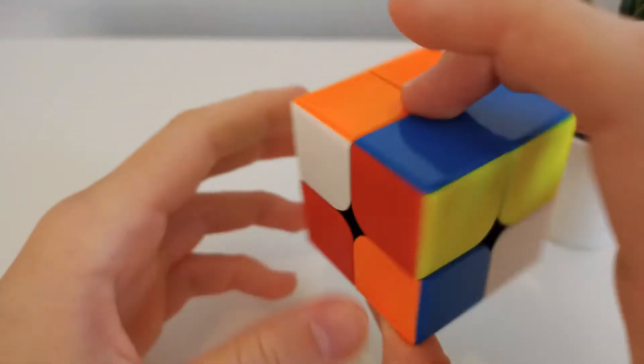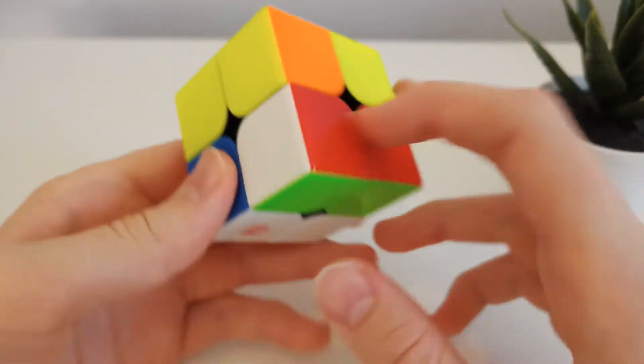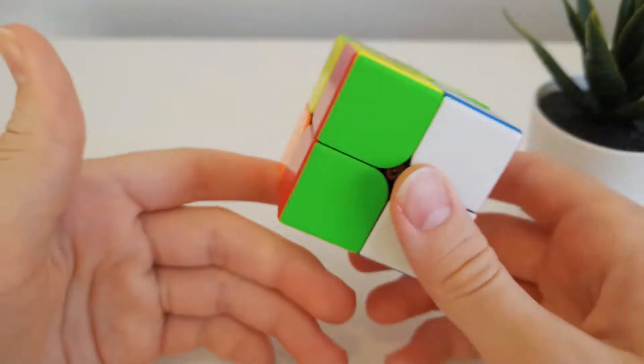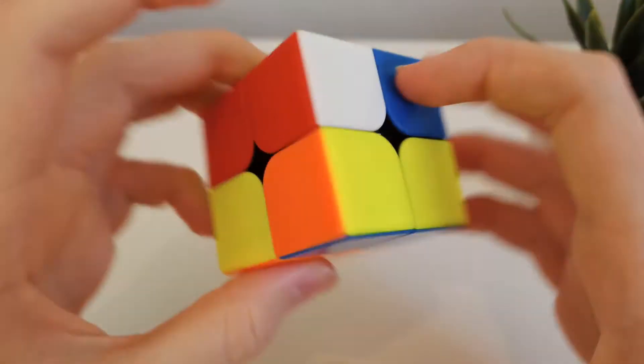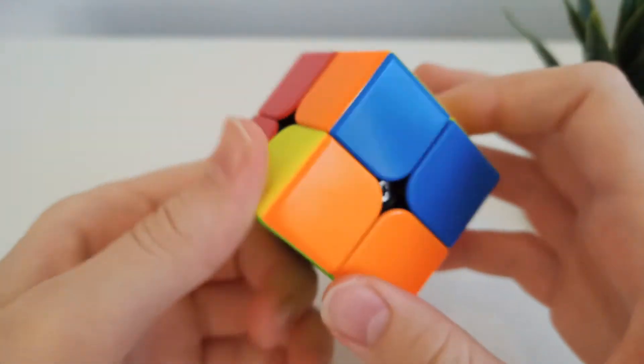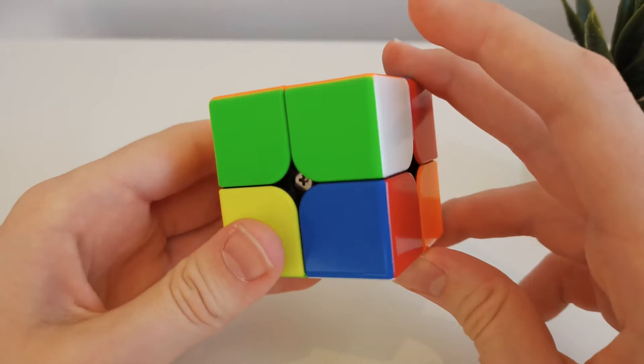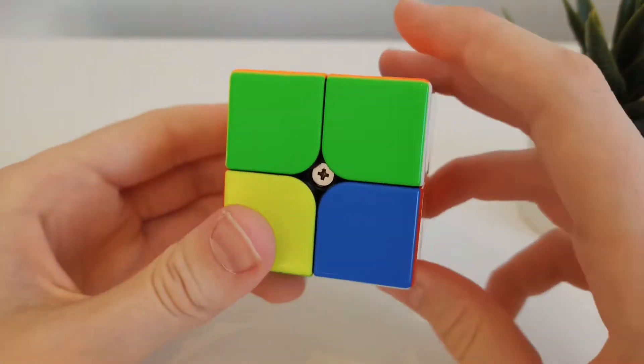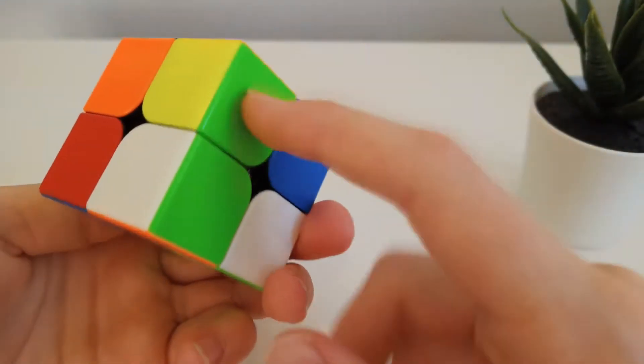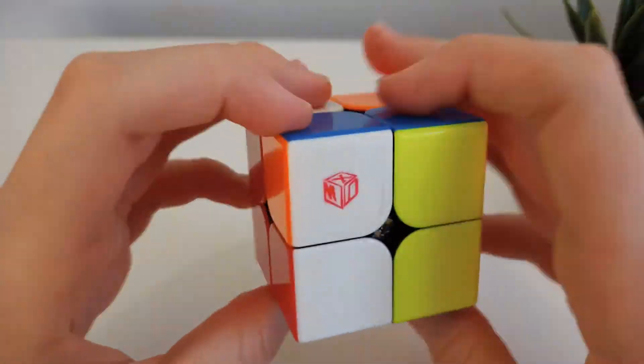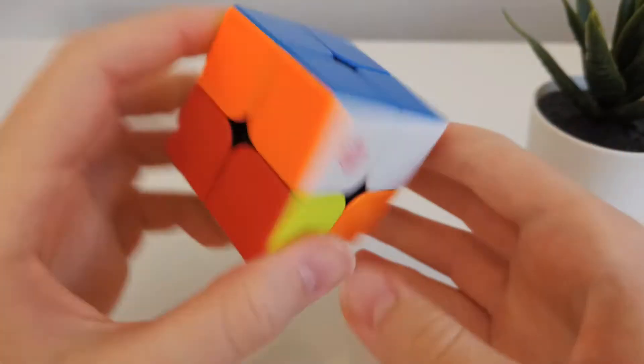So here we have heaps of bars across the cube. White is pretty close to being inserted, but actually green looks... Let me just check. Yeah, green looks the most promising here, so we can... Instead of inserting this, we can actually do an R2, and then U2 to pair them up, and then an R2 put them in, and then that's actually a really easy OLL as well.